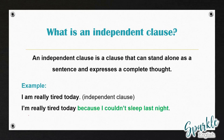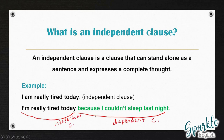However, if we have the sentence 'I'm really tired today because I couldn't sleep last night,' this would be an independent clause because it can stand alone. But 'because I couldn't sleep last night' would be a dependent clause. If you went up to someone and said 'because I couldn't sleep last night,' that doesn't express a complete thought — it doesn't really make sense. This dependent clause needs the independent clause in order to make sense.